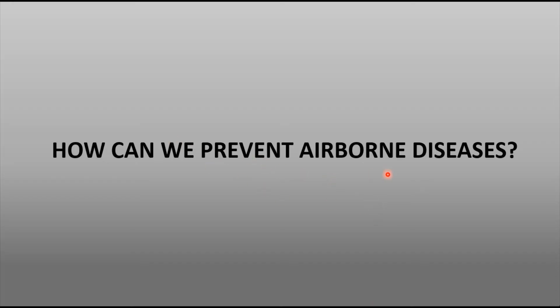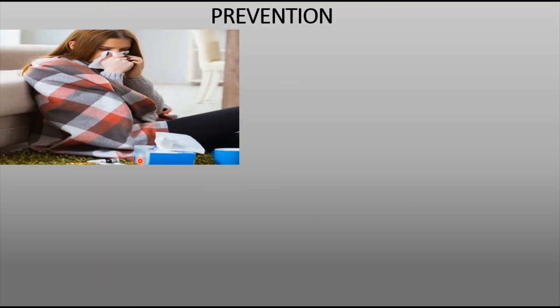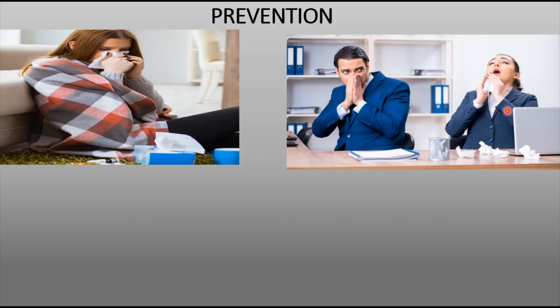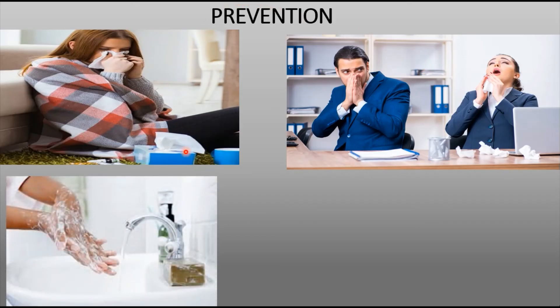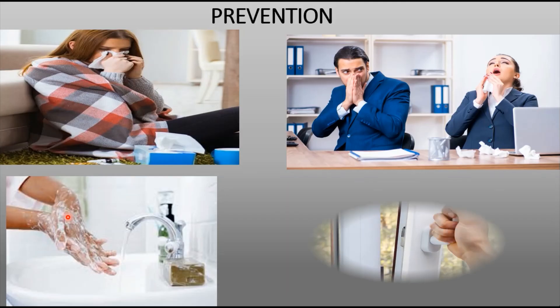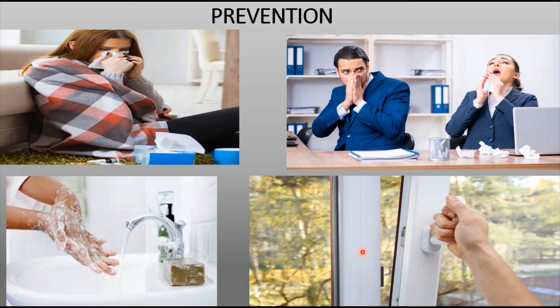Moving to prevention — how can we prevent airborne diseases? Complete prevention is difficult, but there are ways to reduce exposure to the pathogens. Simple measures include staying home when sick, reducing contact with infected people, maintaining hygienic and sanitary habits, and ensuring good ventilation by opening a window or using fans to exchange indoor and outdoor air.